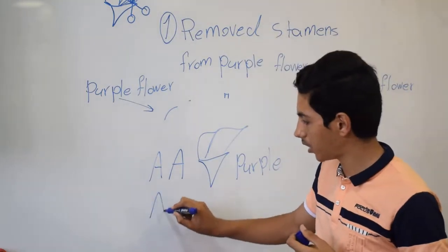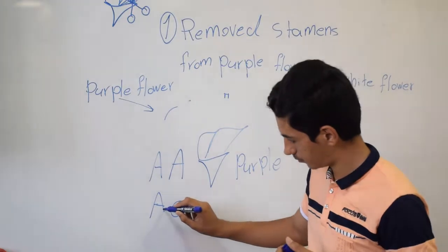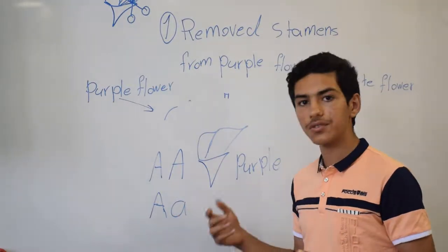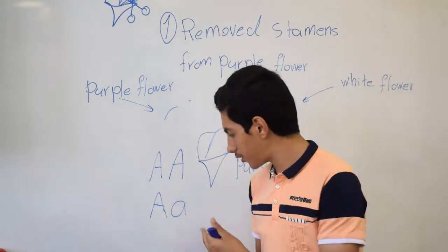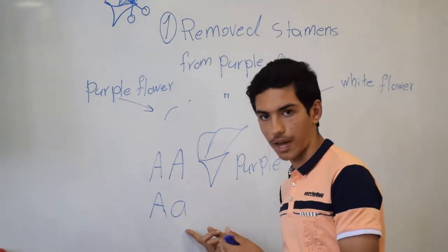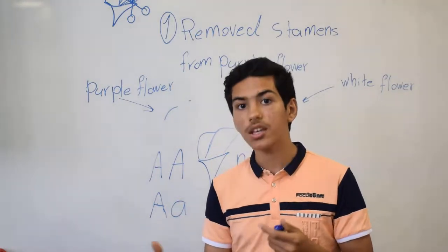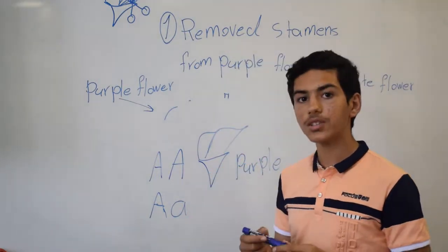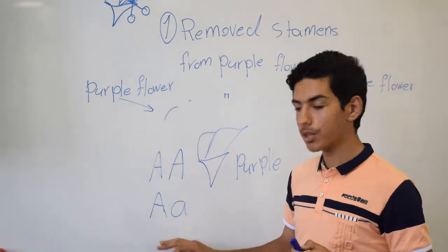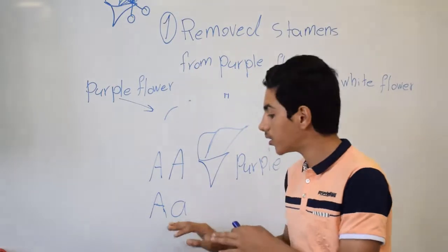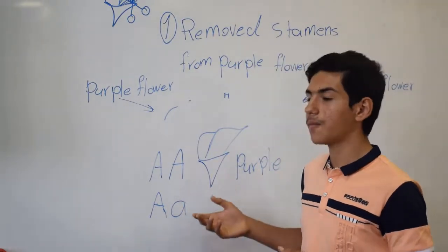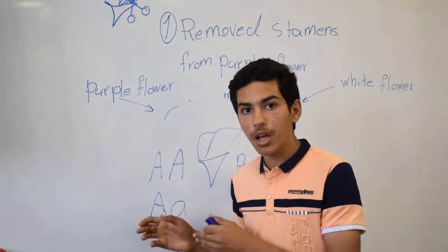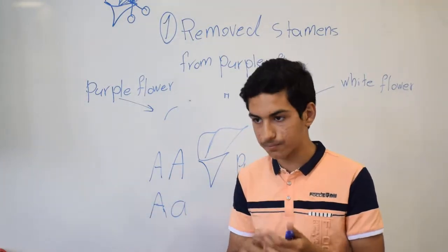We have a genotype that is capital A and small a. Capital A is a dominant allele and small a is a recessive allele. So in this genotype we have one dominant and one recessive allele. The recessive allele has a few problems, but the dominant allele does not have any problems.